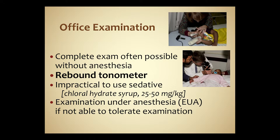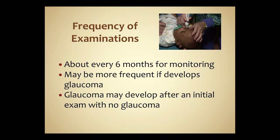We can often now do complete examinations in the clinic without anesthesia. The rebound tonometer has been useful in avoiding examinations under anesthesia. Sometimes it is difficult to obtain the needed information and we do have to do examinations under anesthesia. In the past we used sedatives like chloral hydrate in the clinic, but now this is impractical so we go directly to EUA when needed, though fortunately that is now fairly infrequent. We try to see patients every six months because of the risk of developing elevated IOP at any time during childhood, and we remind parents that glaucoma can occur even if an initial examination is normal.